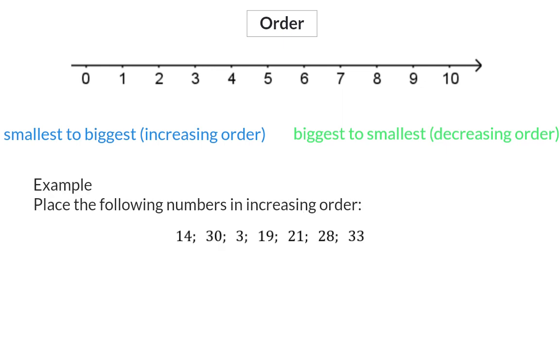Example: place the following numbers in increasing order. This means we'll have to start with the smallest number, and that will be 3. Next, we'll have to look at the tens. We have 14 and 19, which will mean that we'll have 14 next, and then 19.